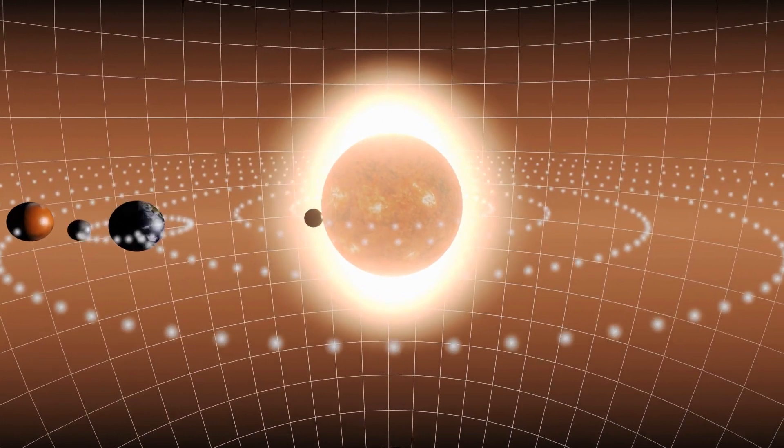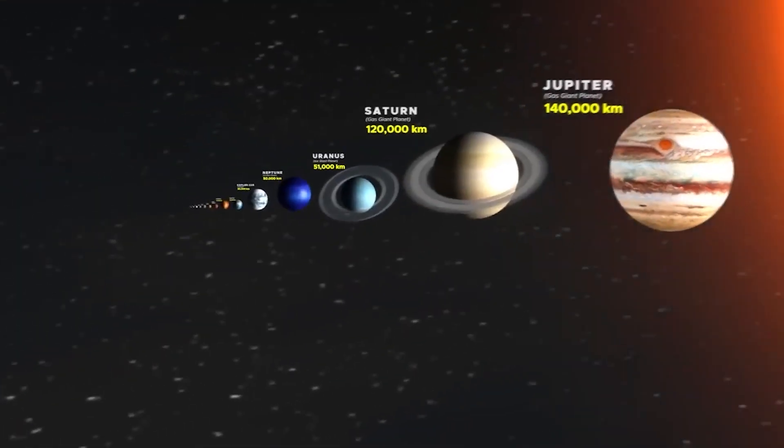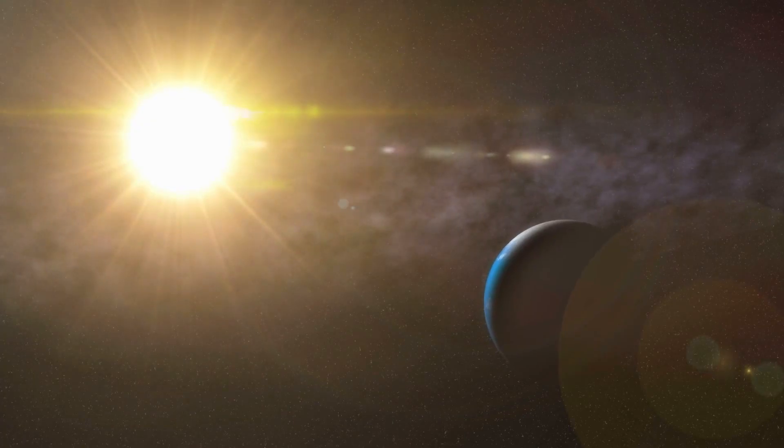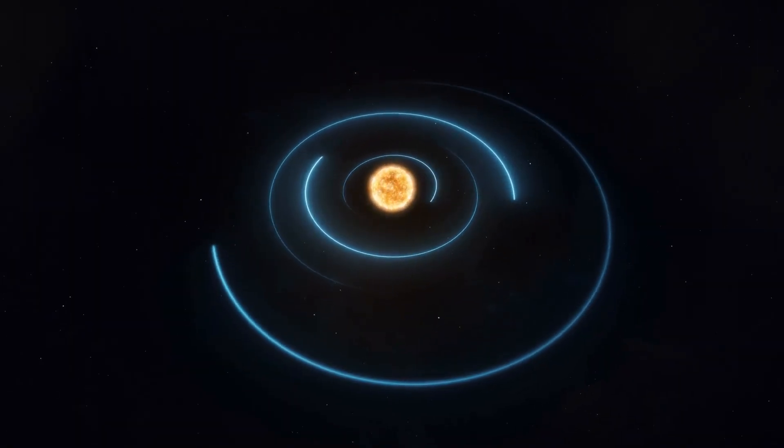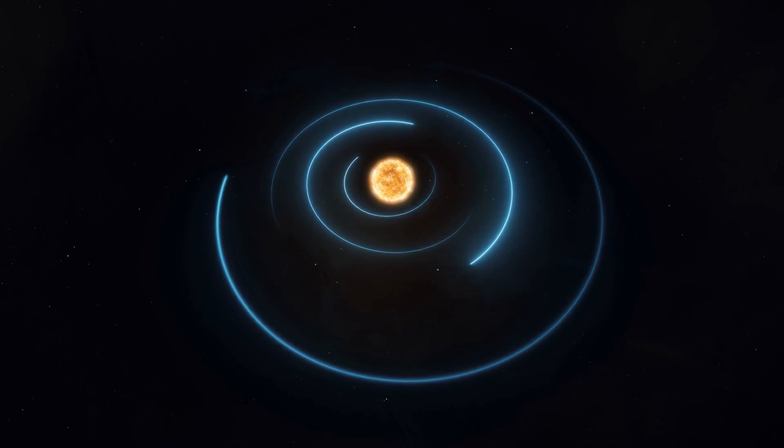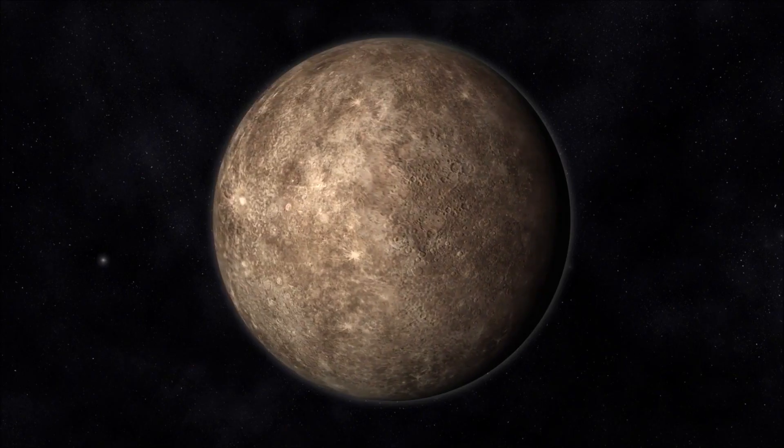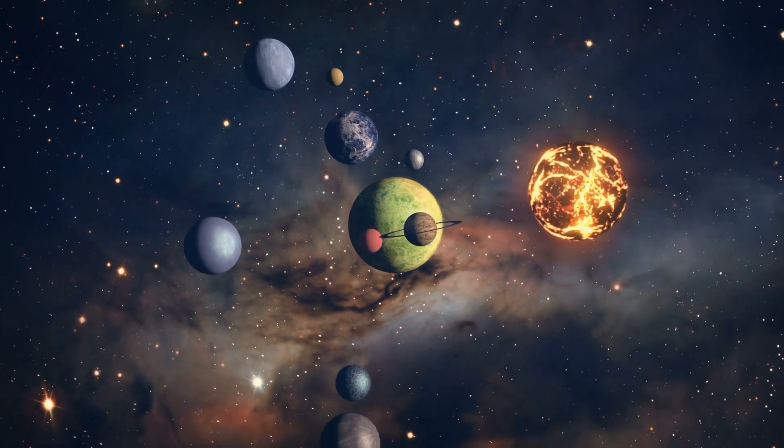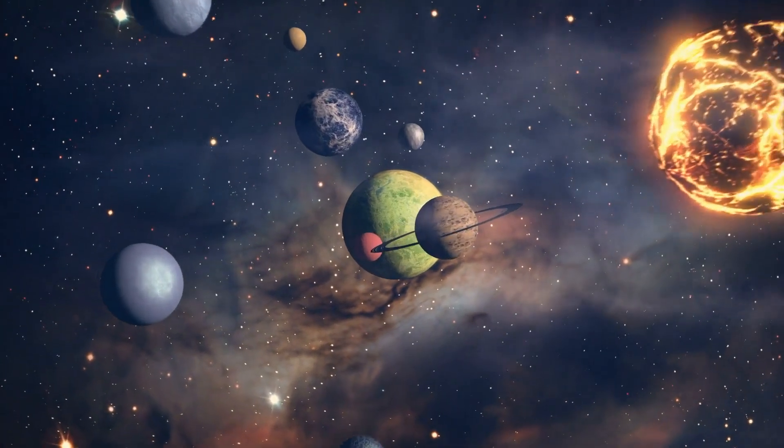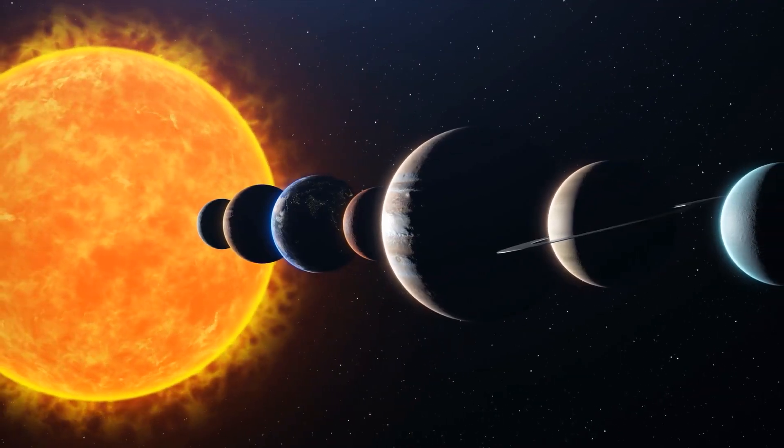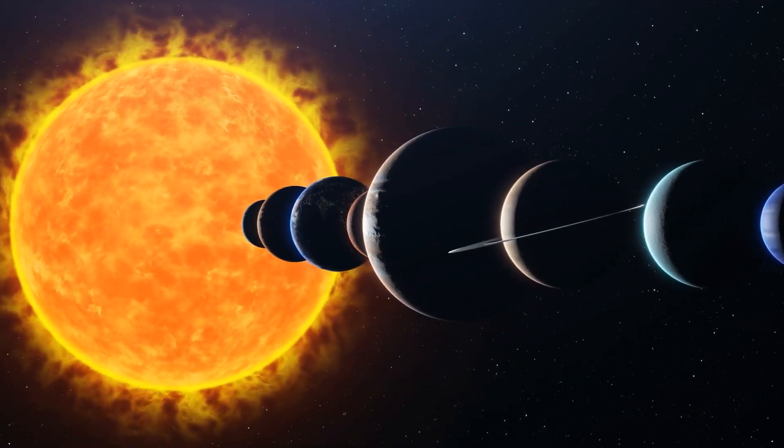However, due to the elliptical orbit of Earth around the Sun, the distance can vary between 147 million kilometers at the closest point, perihelion, and 152 million kilometers at the farthest point, aphelion. Moving outward from the Sun, we encounter the planets of our solar system. The closest planet to the Sun is Mercury, located at an average distance of about 58 million kilometers. Venus follows at an average distance of approximately 108 million kilometers from the Sun.